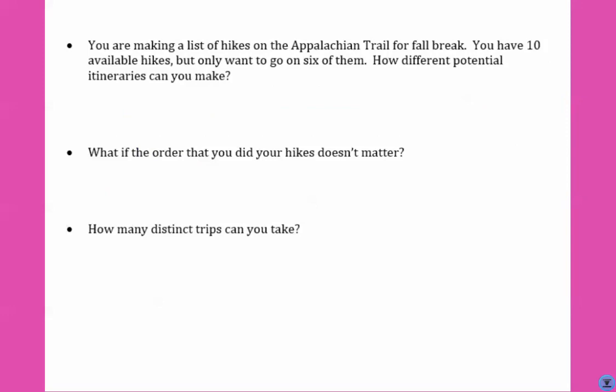So let's look at the next example. Let's say you're making a list of hikes on the Appalachian Trail for fall break. You have 10 available hikes, but you only want to go on six of them. How many different potential itineraries can you make? Now, when you're making an itinerary, you're saying the order that you're going to do things in. So we would have 10 trails, we want to put them in a certain order, and we're going to choose six of the trails.